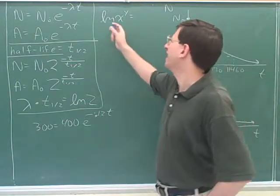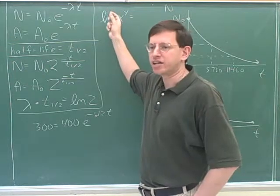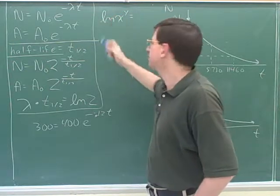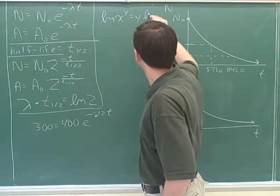e to the y equals x. That's actually an interpretation of the natural log. That wouldn't really simplify this over here. The simplification is y ln x. That's right.